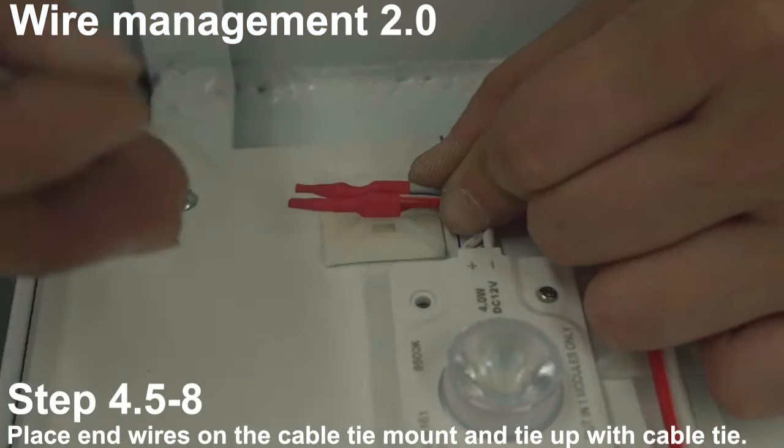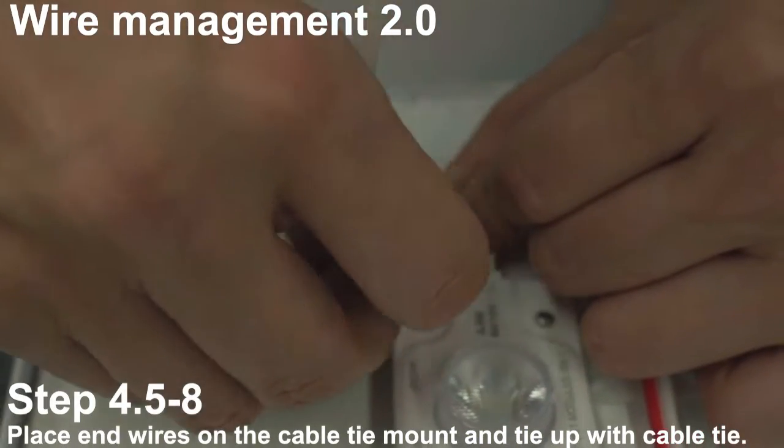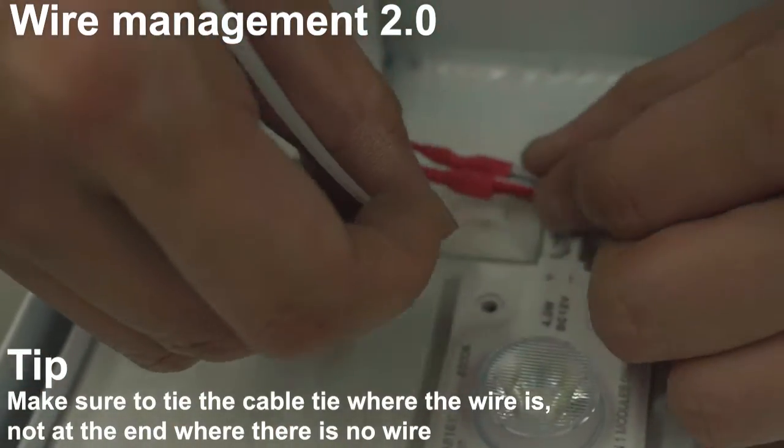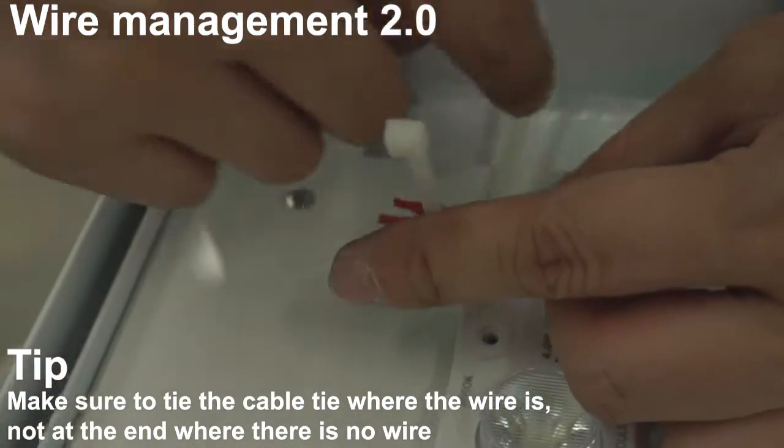Place end wires on the cable tie mount and tie up with cable tie. Make sure to tie the cable tie where the wire is, not at the end where there is no wire.